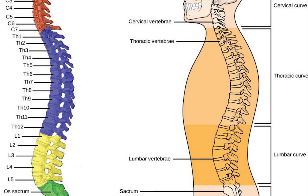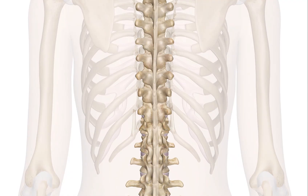The dorsal portion of the vertebral column houses the spinal canal, a cavity formed by alignment of the neural arches that encloses and protects the spinal cord. The human vertebral column is one of the most studied examples, as the general structure of human vertebrae is fairly typical of that found in other mammals, reptiles, and birds. The shape of the vertebral body does, however, vary somewhat between different groups of living species.